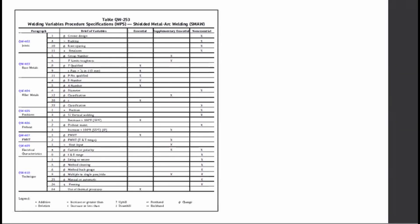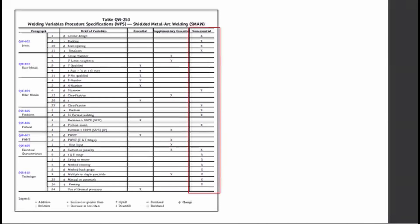Here is an example of the tabulation of essential, supplementary, and non-essential variables in ASME Section 9. The parameters in the WPS are indicated in the rows and show whether or not they are essential, supplementary, or non-essential variables.